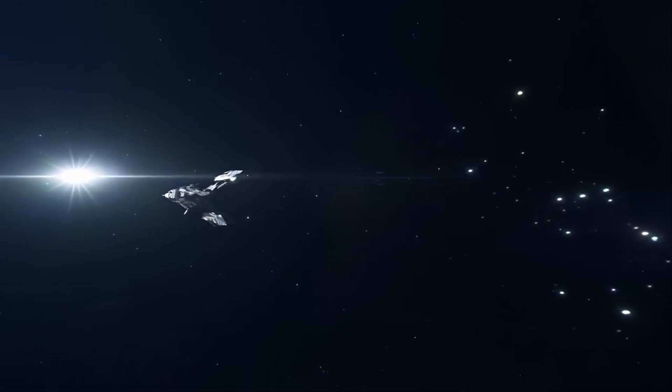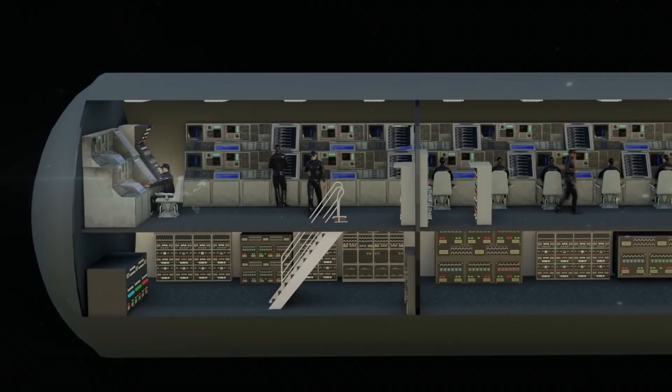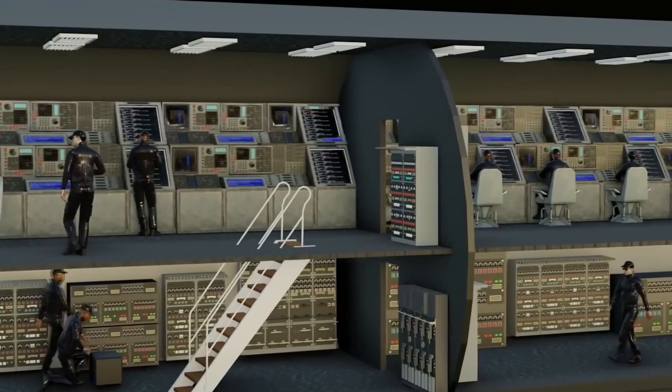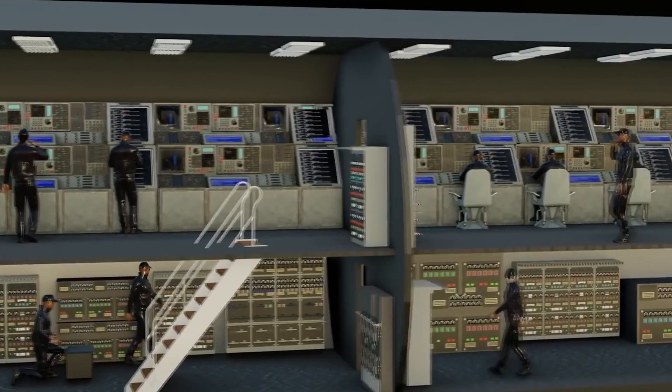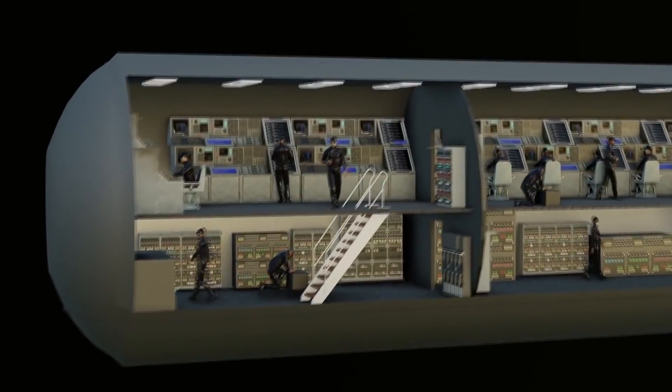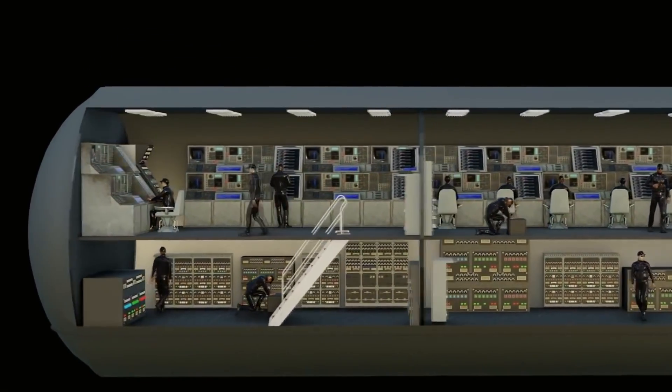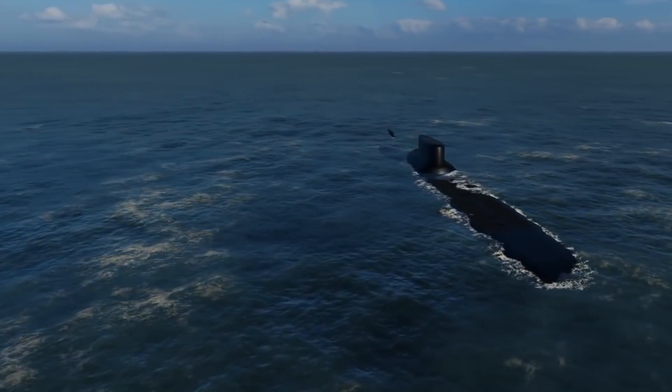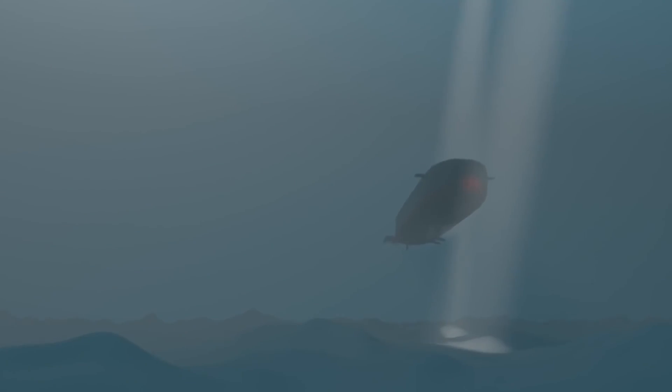Submarines may also use compressed oxygen tanks as a backup or emergency oxygen source that can be used in the event of failure of other systems. As a last resort, submarines may be equipped with emergency chemical oxygen generators. These devices produce oxygen through a chemical reaction, usually involving the decomposition of a solid chemical compound to produce oxygen gas.